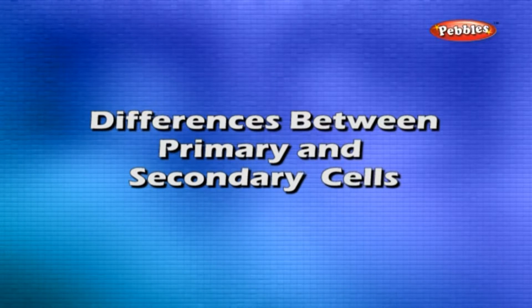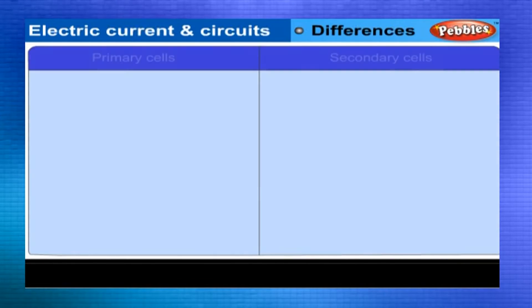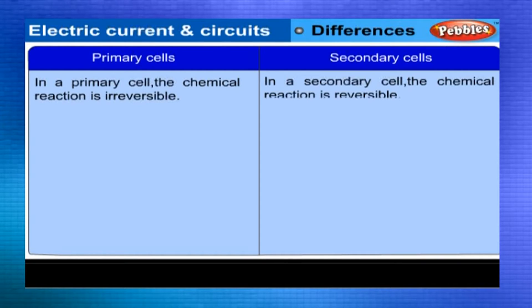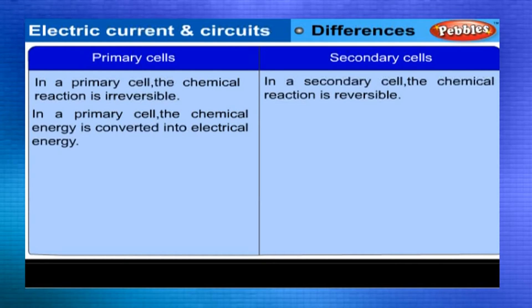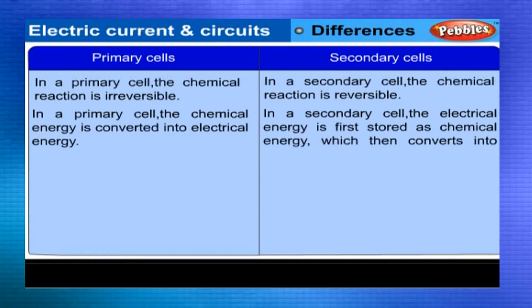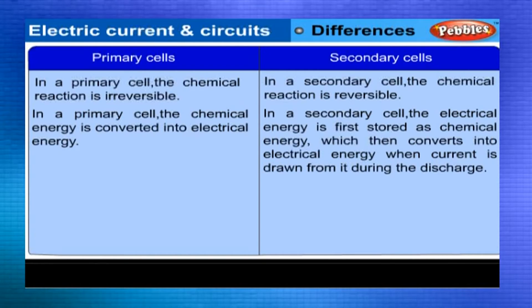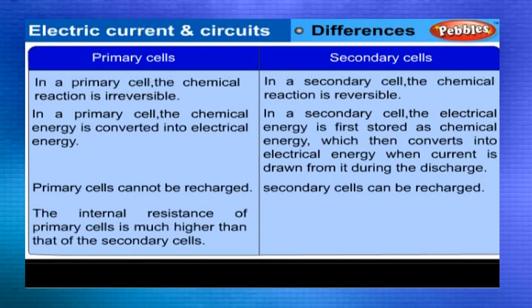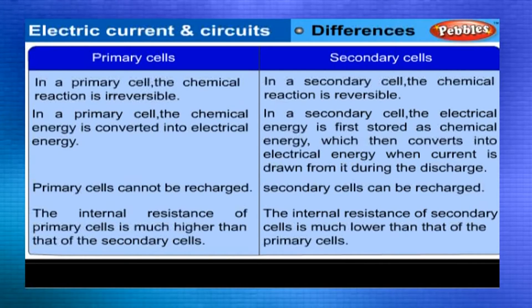Differences between primary and secondary cells. In a primary cell, the chemical reaction is irreversible, whereas in a secondary cell the chemical reaction is reversible. In a primary cell, chemical energy is converted into electrical energy, whereas in a secondary cell the electrical energy is first stored as chemical energy, which then converts into electrical energy when current is drawn during discharge. Primary cells cannot be recharged, whereas secondary cells can be recharged.